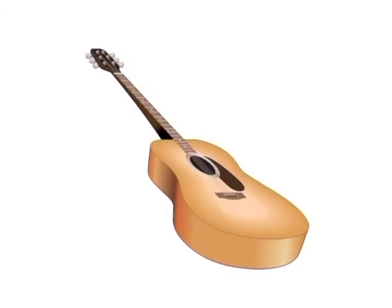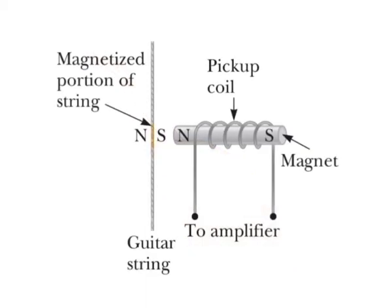Another interesting application of Faraday's law is the production of sound in an electric guitar. The coil, called the pickup coil, is placed near the vibrating guitar string, which is made of a metal that can be magnetized. A permanent magnet inside the coil magnetizes the portion of the string nearest the coil. When the string vibrates at some frequency, its magnetized segment produces a changing magnetic flux through the coil. The changing flux induces an EMF in the coil that is fed to an amplifier, and the output of the amplifier is sent to loudspeakers which produce the sound waves we hear.